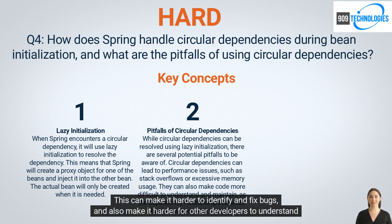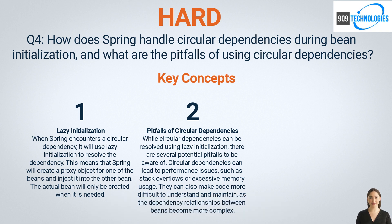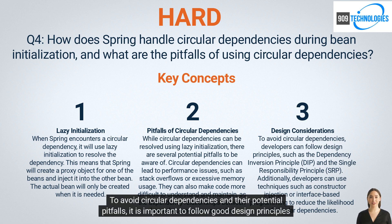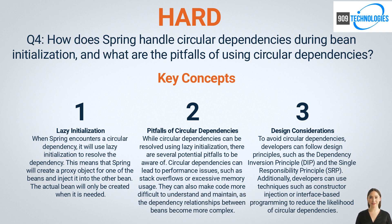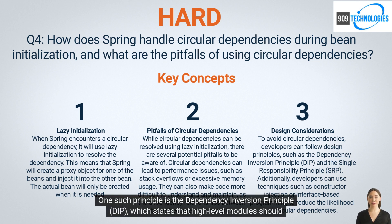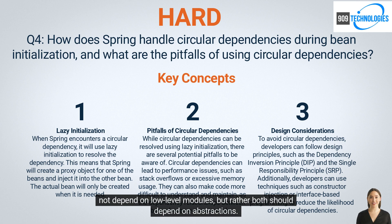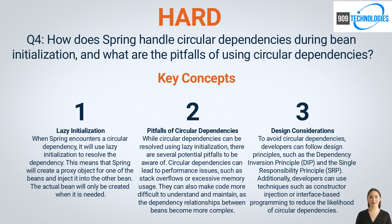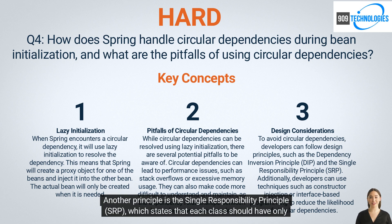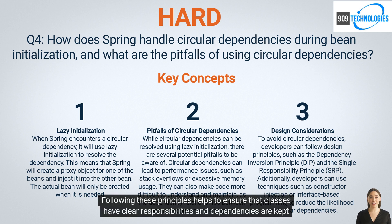Circular dependencies can make it harder to identify and fix bugs, and also harder for other developers to understand and work with the code. To avoid circular dependencies and their potential pitfalls, it is important to follow good design principles. One such principle is the Dependency Inversion Principle (DIP), which states that high-level modules should not depend on low-level modules, but both should depend on abstractions. Another principle is the Single Responsibility Principle (SRP), which states that each class should have only one responsibility.